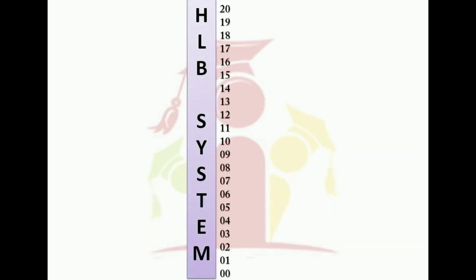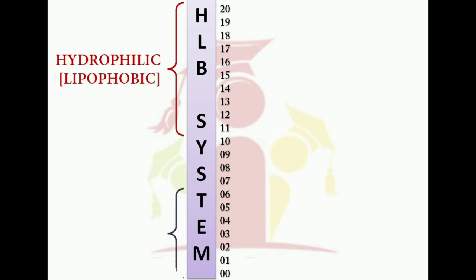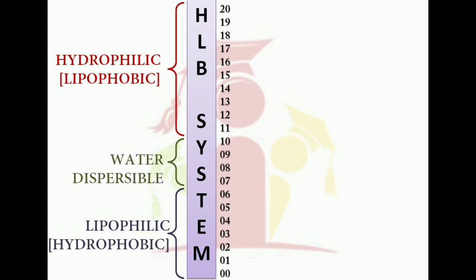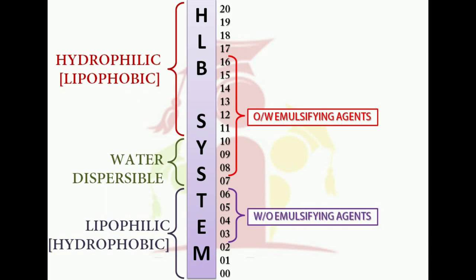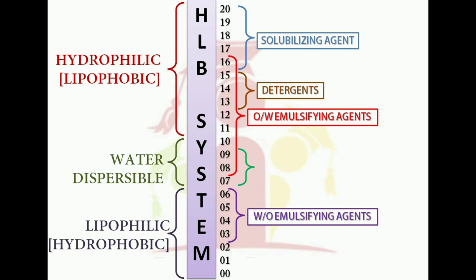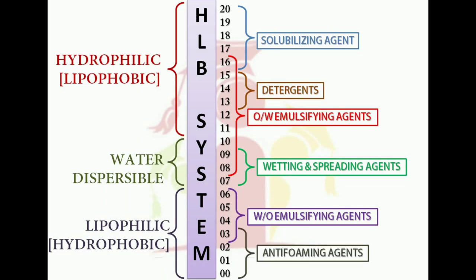This is the HLB scale, which ranges from 0 to 20. On the left-hand side, from 11 to 20, we have the hydrophilic or lipophobic range. From 0 to 6, we have the lipophilic or hydrophobic range, and in the middle, from 7 to 10, we have the water-dispersible phase. On the right-hand side, from 8 to 16, we have the O/W emulsifying agents. From 3 to 6, we have the W/O emulsifying agents. From 16 to 20, we have solubilizing agents. From 13 to 15, we have detergents. From 7 to 9, we have wetting and spreading agents. From 0 to 3, we have antifoaming agents.